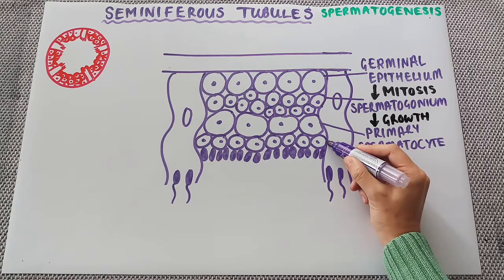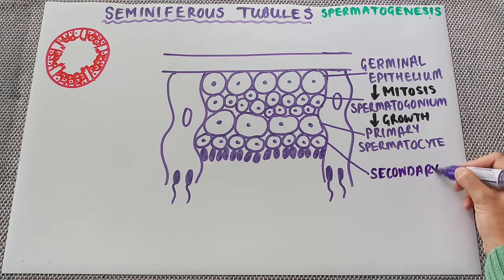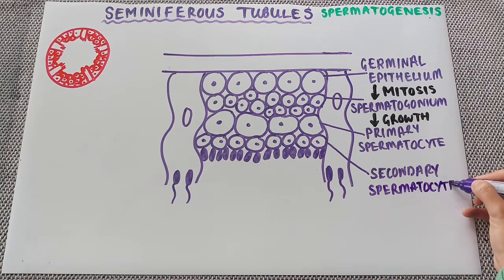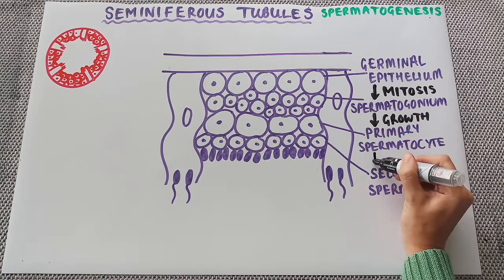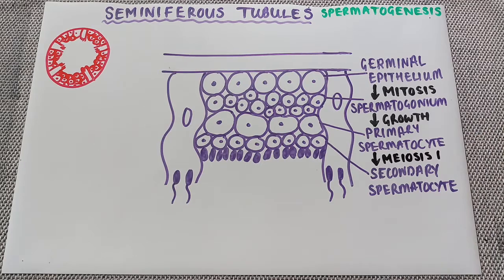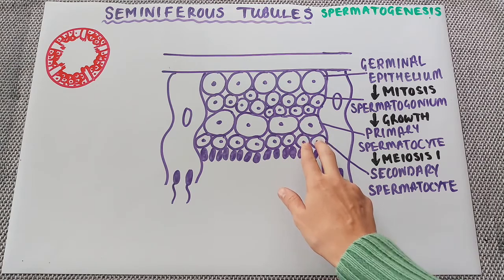The primary spermatocytes go through the first division of meiosis to become secondary spermatocytes. The difference here between spermatogenesis and oogenesis is that in meiosis I of oogenesis, a polar body was formed and then started to degenerate — it was only the primary oocyte that went on to finally form an ovum. In spermatogenesis, both products of meiosis I become secondary spermatocytes — there is no polar body formed. So one primary spermatocyte forms two secondary spermatocytes.